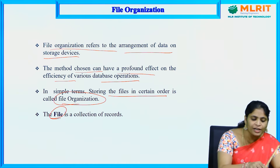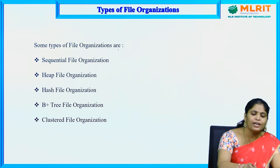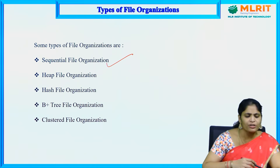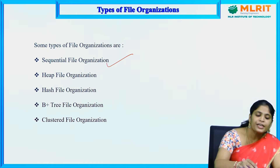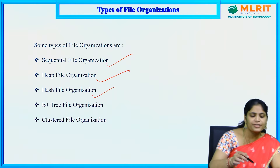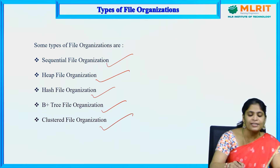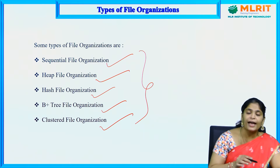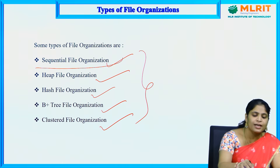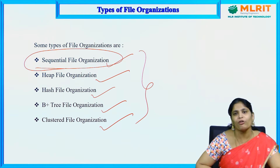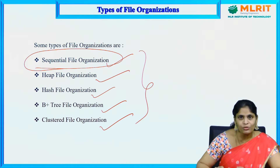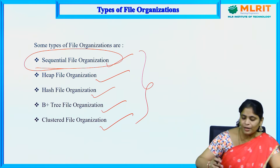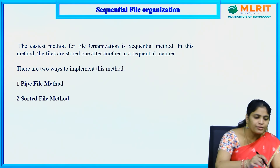A file is a collection of records. The types of file organizations are: sequential file organization, heap file organization, hash file organization, B+ tree file organization, and clustered file organization. In our sessions we will discuss all of these. Especially in this session, let us discuss only sequential file organization. The name itself represents storing files in a sequential manner, that is in a step-by-step process.